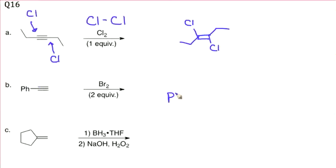So if we have the phenyl group, here's where the triple bond was, and we get four bromines added. Two on this side, and two on that side.